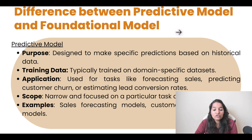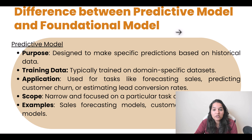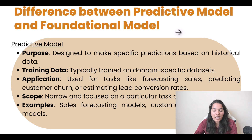The scope of a predictive model is narrow and focused on a particular task or set of tasks — it is not going to generalize everything. That is where the generative or foundational model will come into perspective. The predictive model is particularly focused on predicting something specific, like how likely an opportunity is going to close. Examples include sales forecasting models and customer churn prediction models.